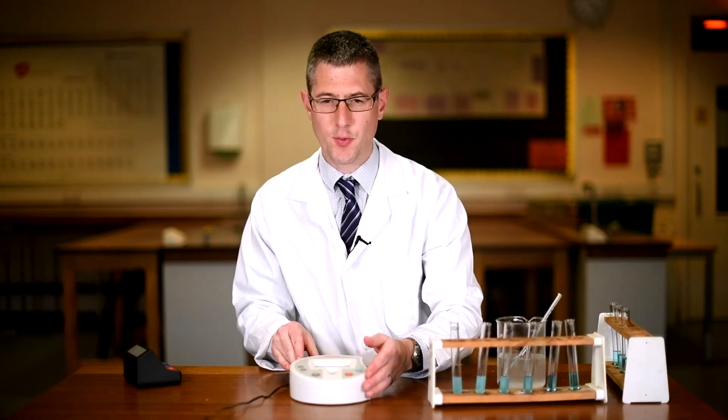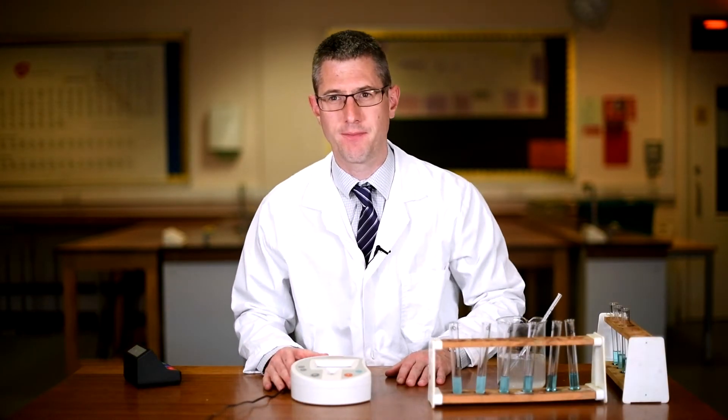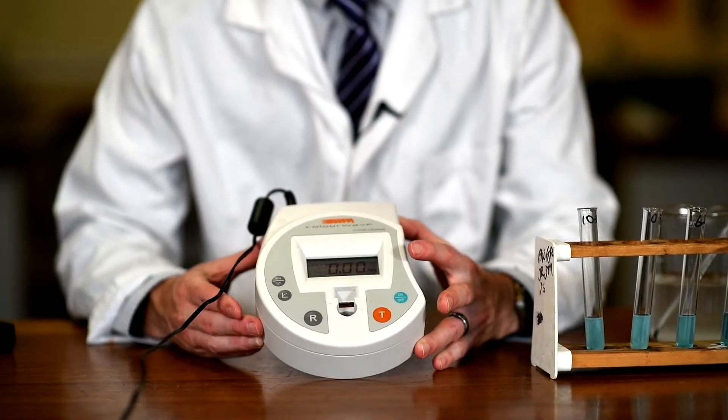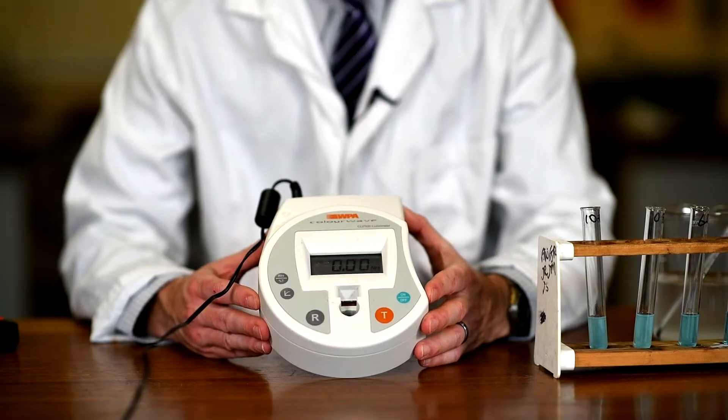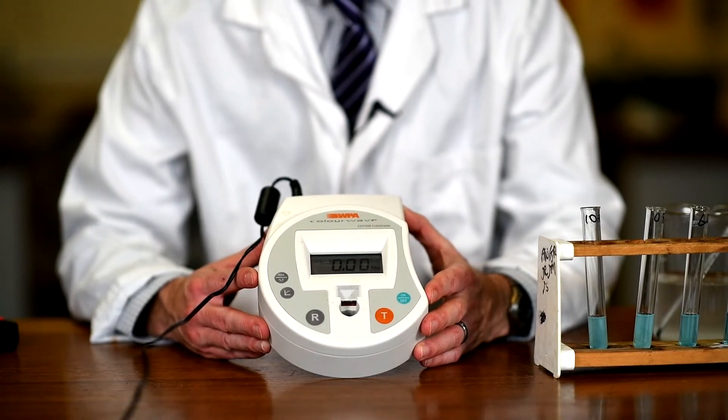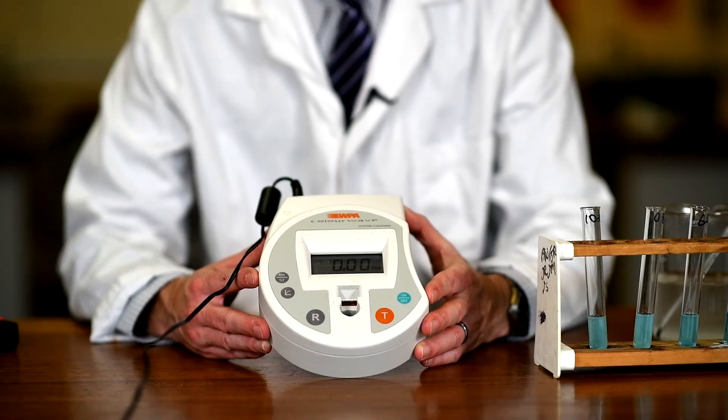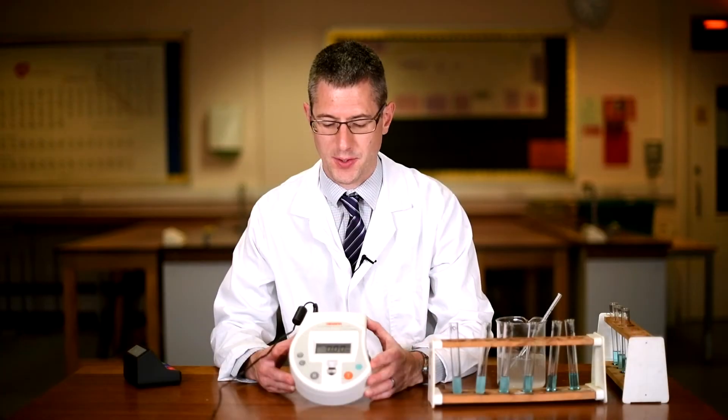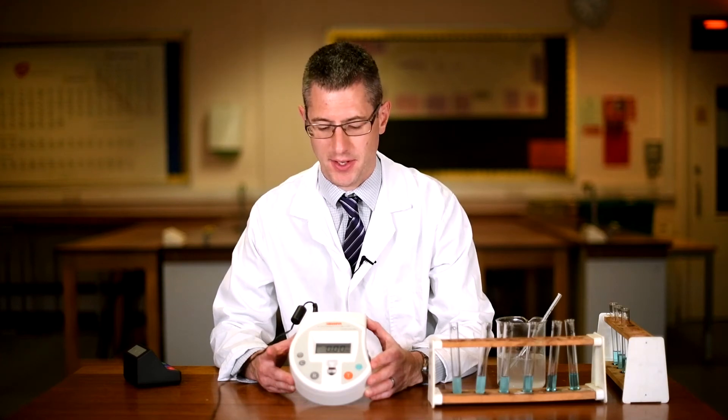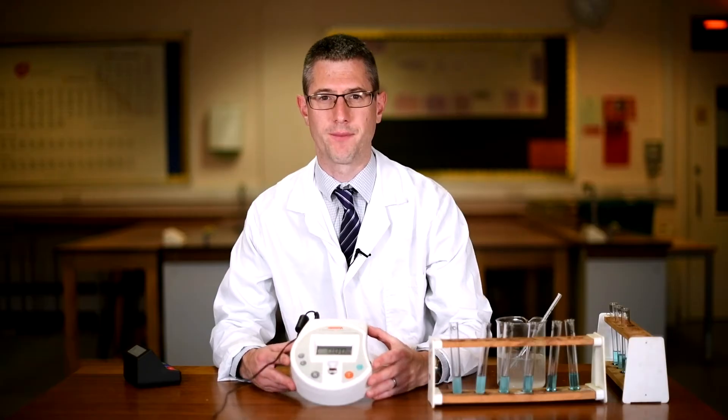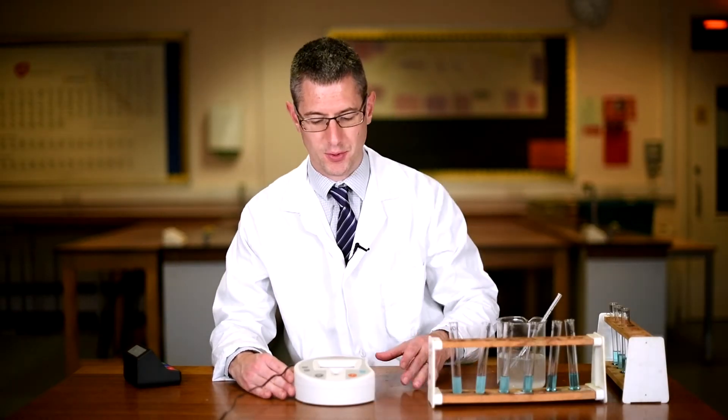We've got here our colorimeter. This is one where you can directly put a test tube in and measure the absorbance of light. So you might see the setting is on absorbance. So we're measuring the absorbance of light by the samples in the test tube. So how much light can pass through the sample and how much light is actually being absorbed, scattered by the sample, so it's not reaching the detector in the colorimeter, giving us a number readout, a quantitative data readout of how cloudy these samples are.